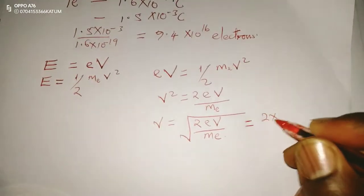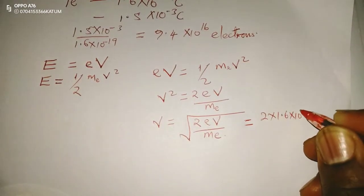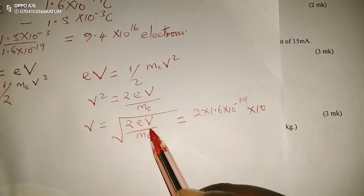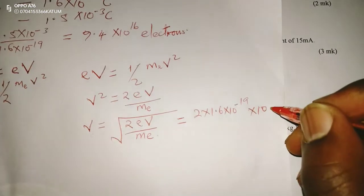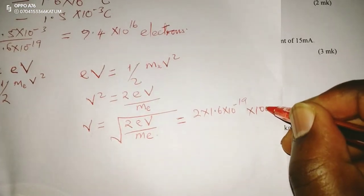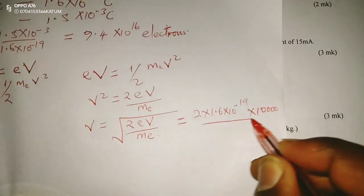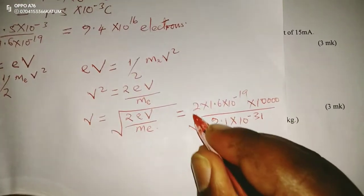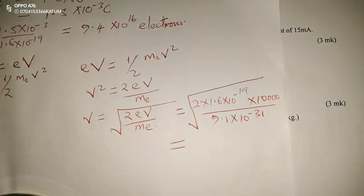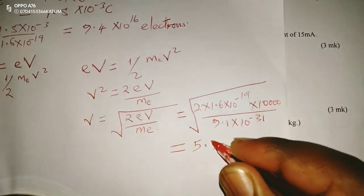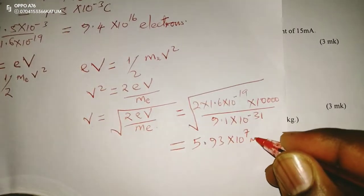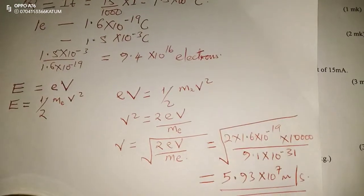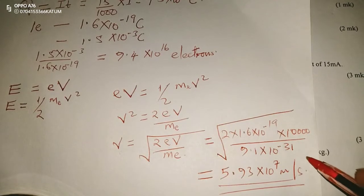Substituting values: 2 × 1.6 × 10⁻¹⁹ × 10 kilovolts (converted to 10,000 volts), divided by the mass of the electron 9.1 × 10⁻³¹. Taking the square root gives us 5.93 × 10⁷ meters per second. This is the velocity with which the emitted electrons hit the target.